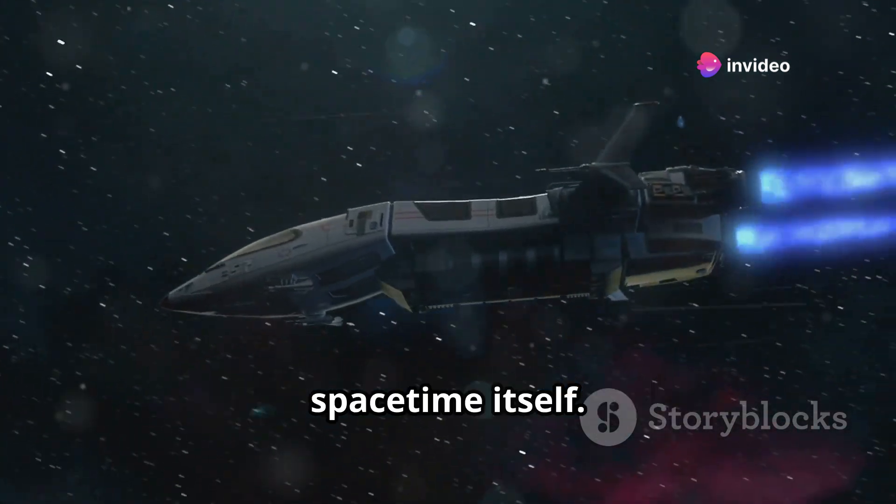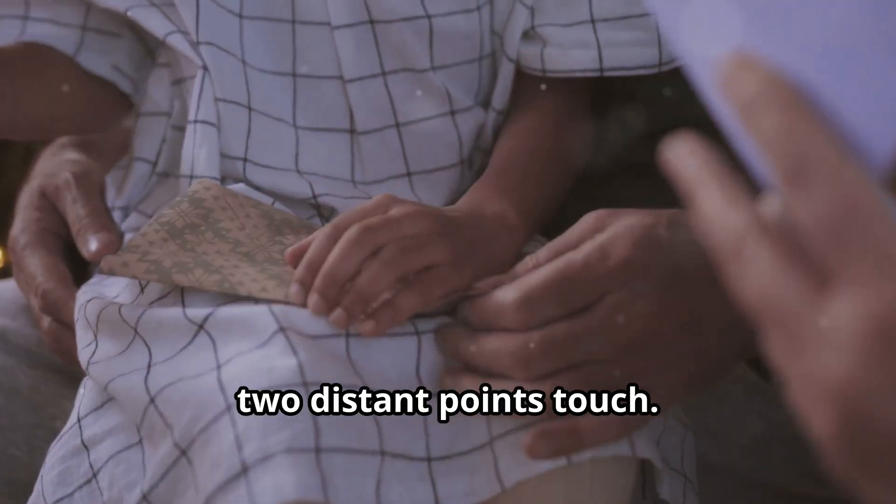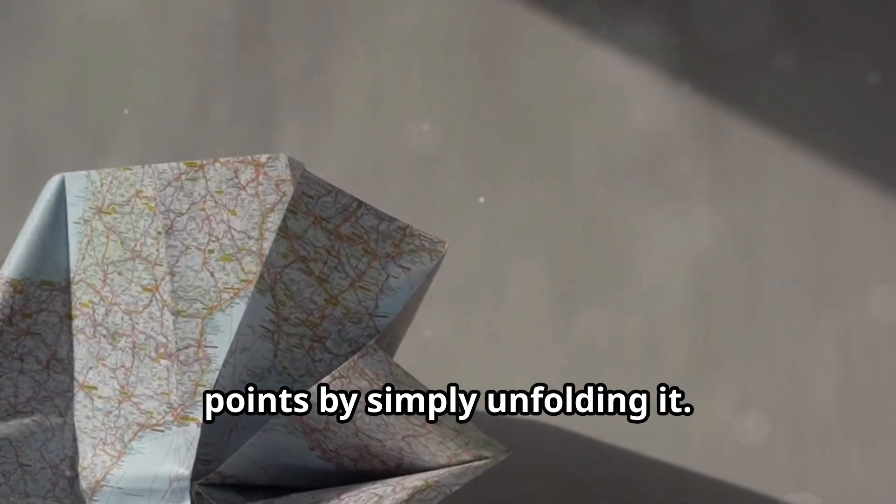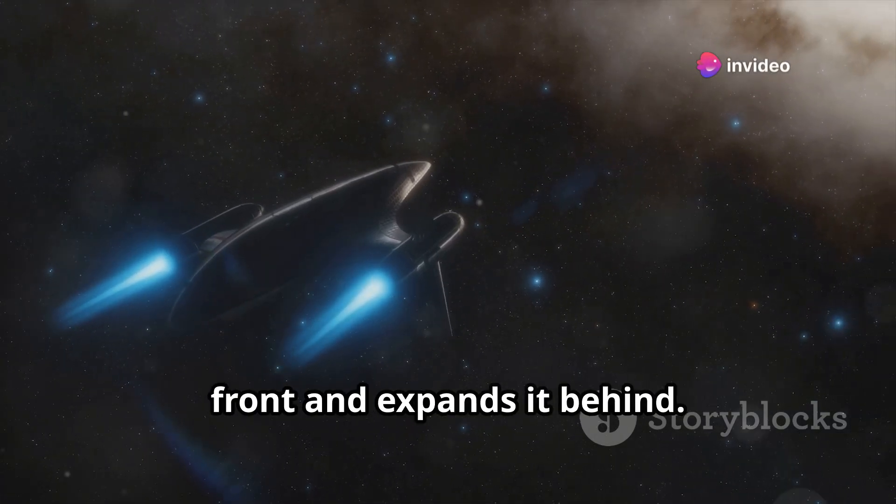A warp drive works by distorting space-time itself. Imagine folding a piece of paper so that two distant points touch—you could instantly jump between the points by simply unfolding it. A warp drive compresses space-time in front and expands it behind.